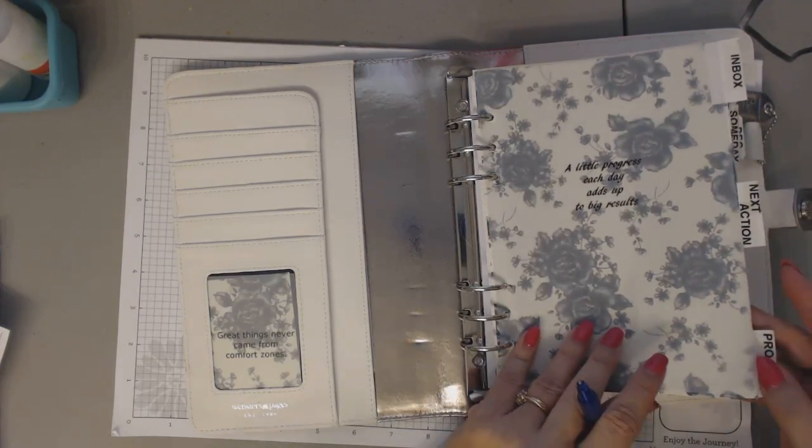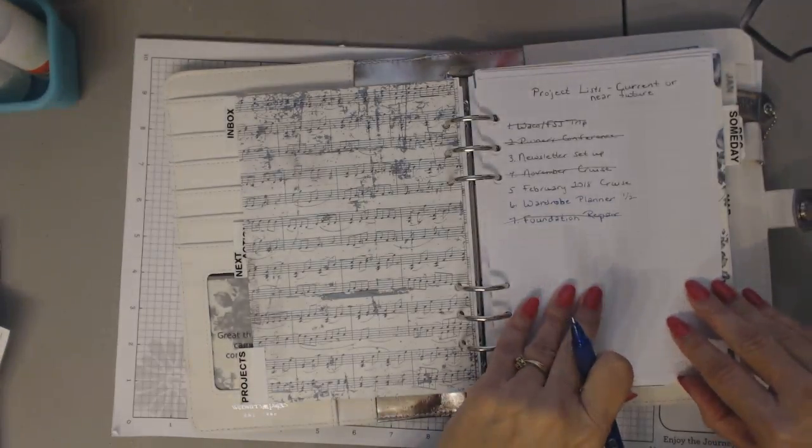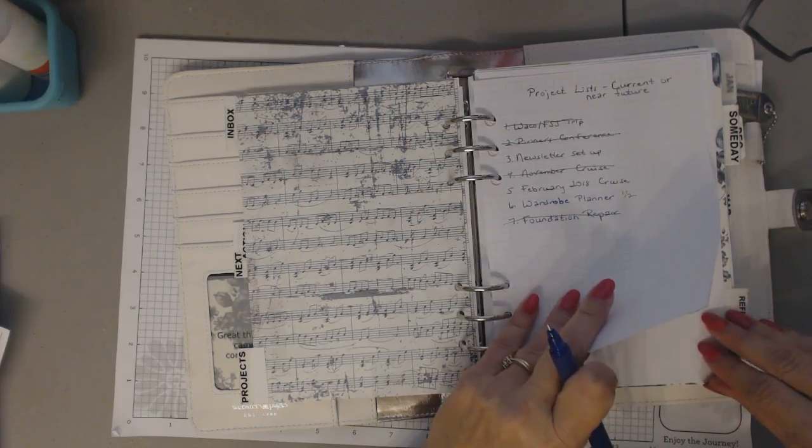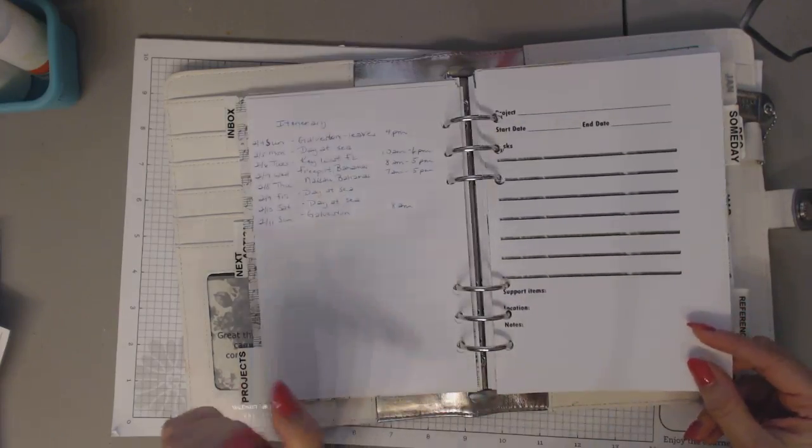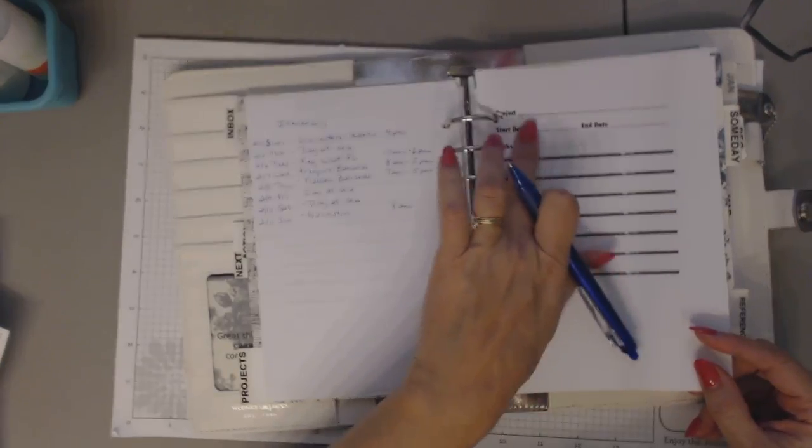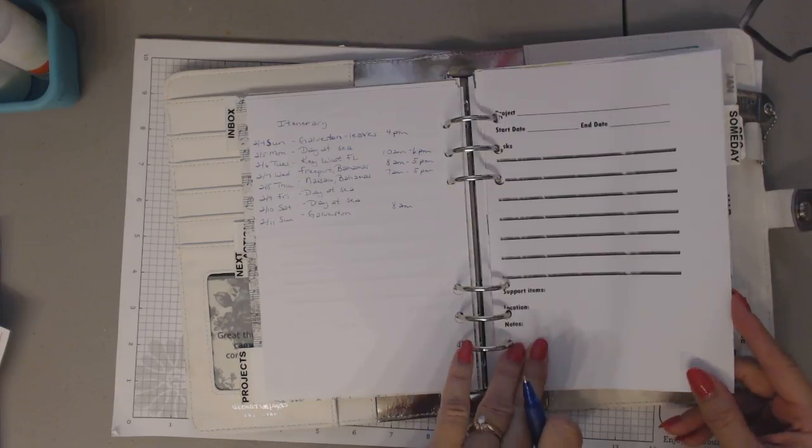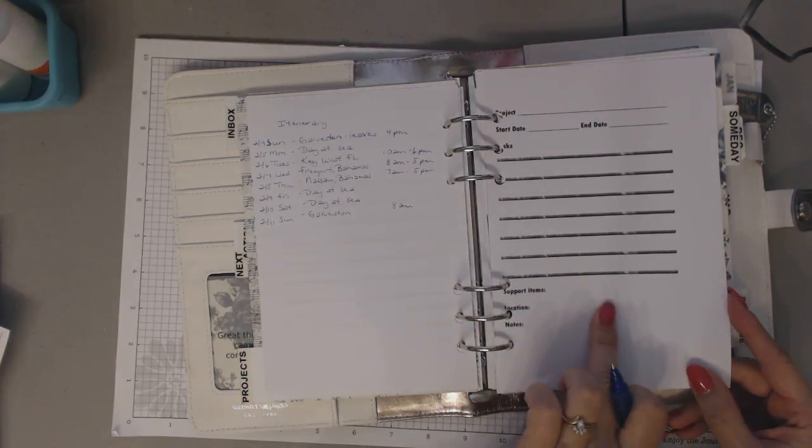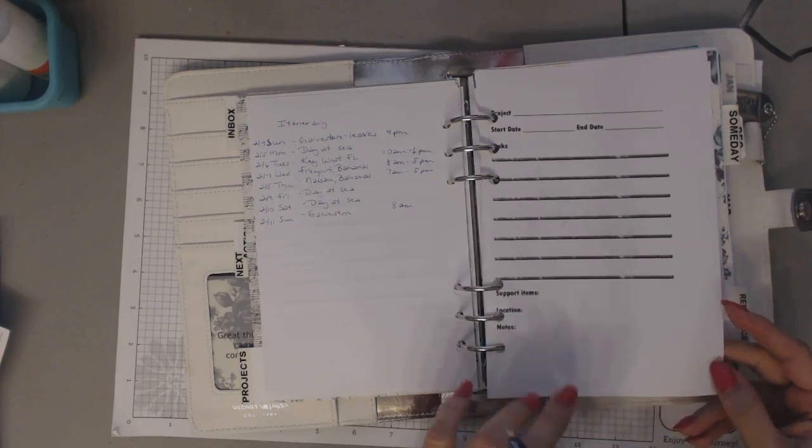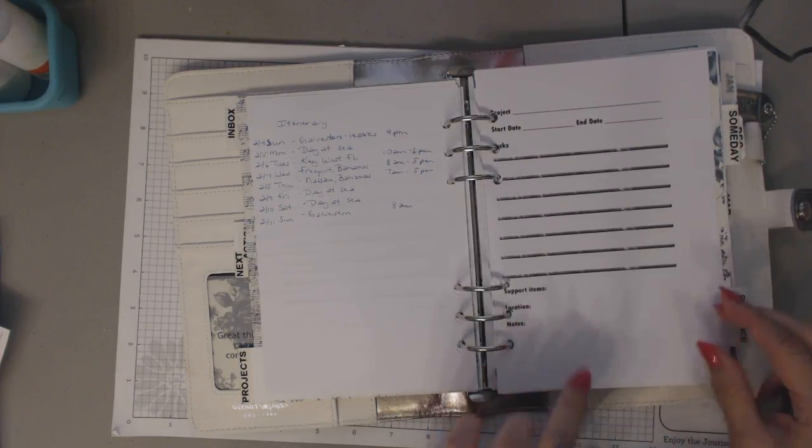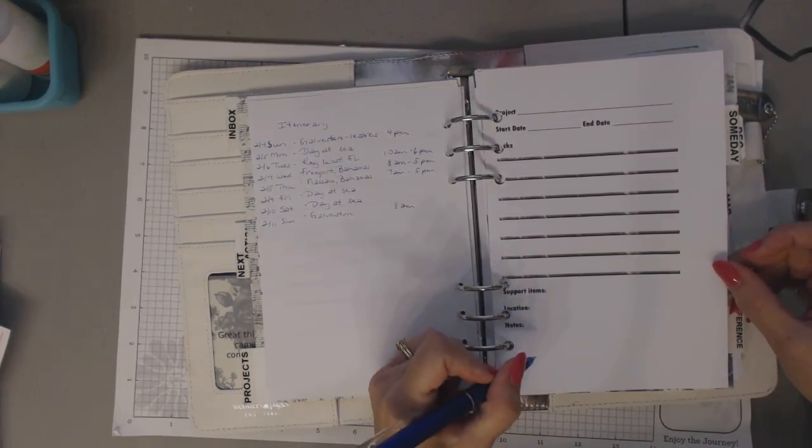Then I have my project pages. And I have a project list here of what's current or in the near future. And I'll show you the blank pages. They're nothing fancy. I just made them on my computer. But this would be the project name, start date, hopeful end date, and then all the tasks I need to do. Support items I may need, location that this is going to happen, which is usually home. But something might, when we go on a cruise, of course that's different, the cruise itinerary. And then notes down here.